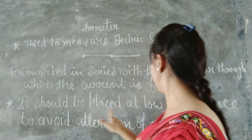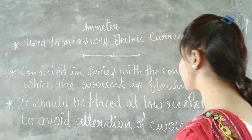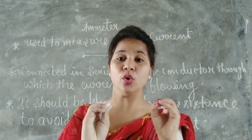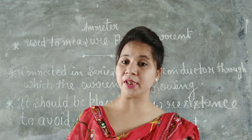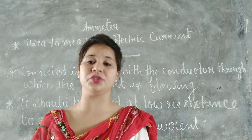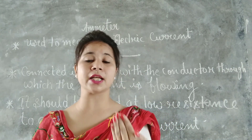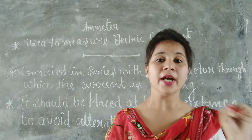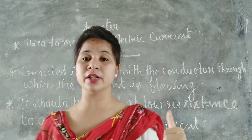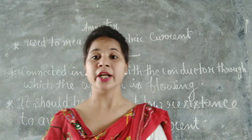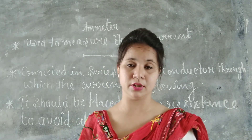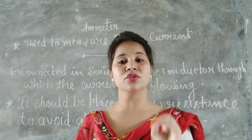The next characteristic is that the ammeter should have low resistance to avoid alteration of current. This means the ammeter's resistance — its capacity to resist the flow of electrons — should be minimum, ideally negligible or nearly equal to zero. If its resistance increases, then the reading of the ammeter will also fluctuate or give incorrect values. That's why an ammeter should have resistance nearly equal to zero.